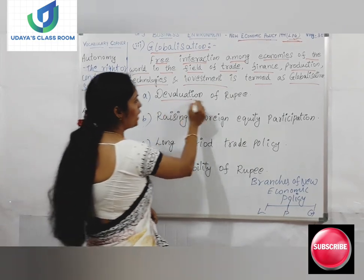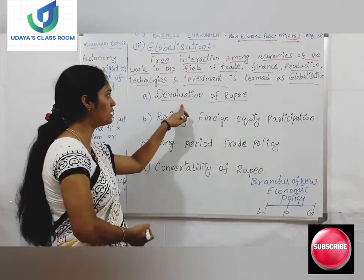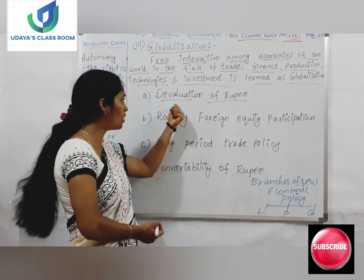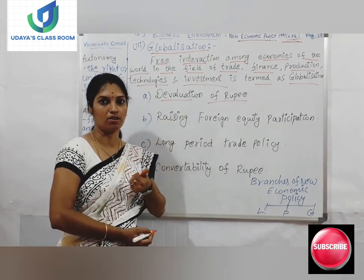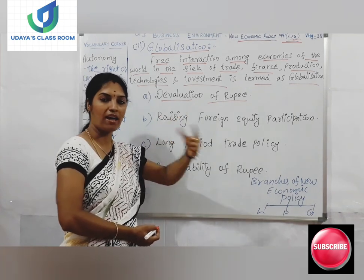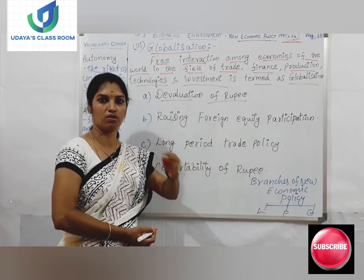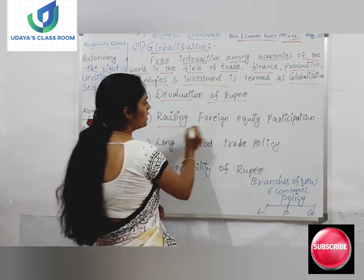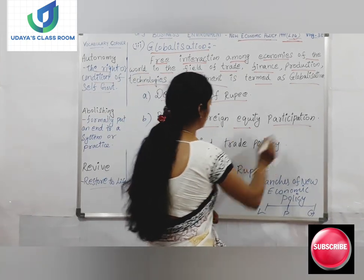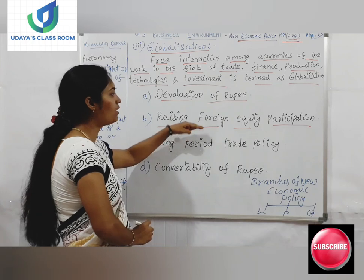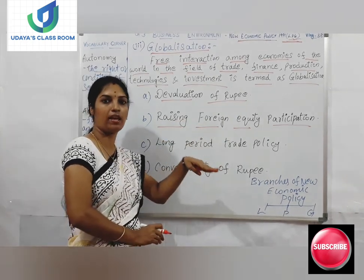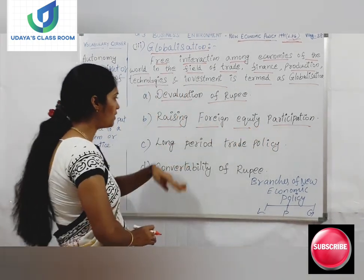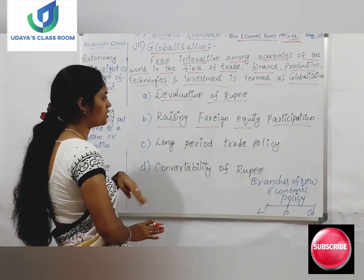The first policy under globalization is devaluation of rupee. Devaluation of rupee means the value of the country's currency is revalued — this will be done by the country's government. India's currency, the rupee, will have variations compared to the US dollar. The next policy is raising foreign equity participation, meaning foreign country people can be equity participants — they can be shareholders of our country, and foreign currencies will come into our country, developing the economy.